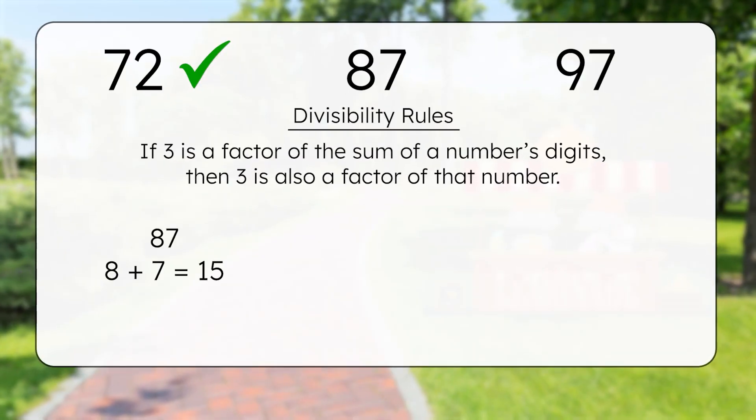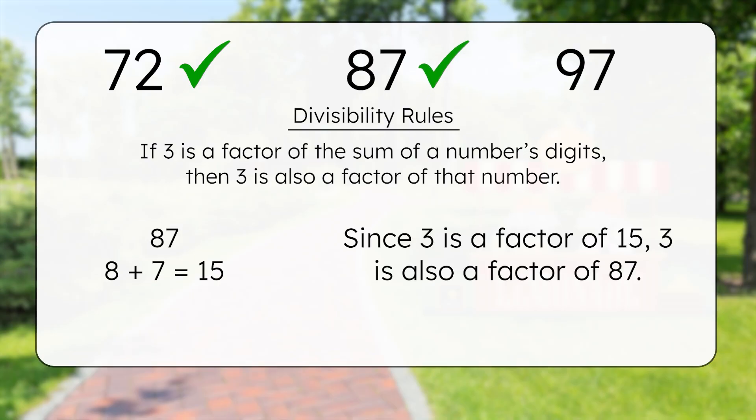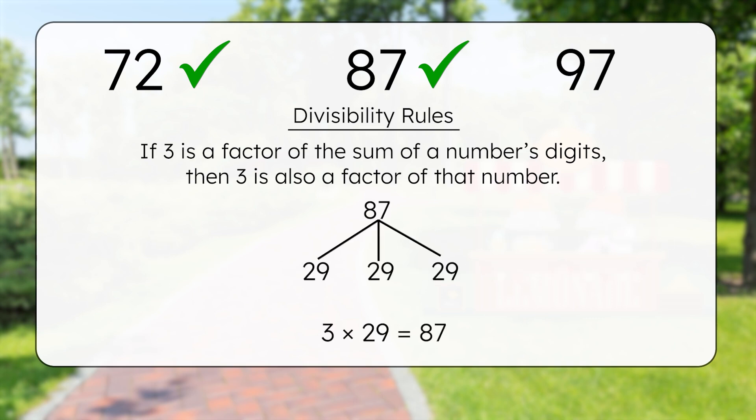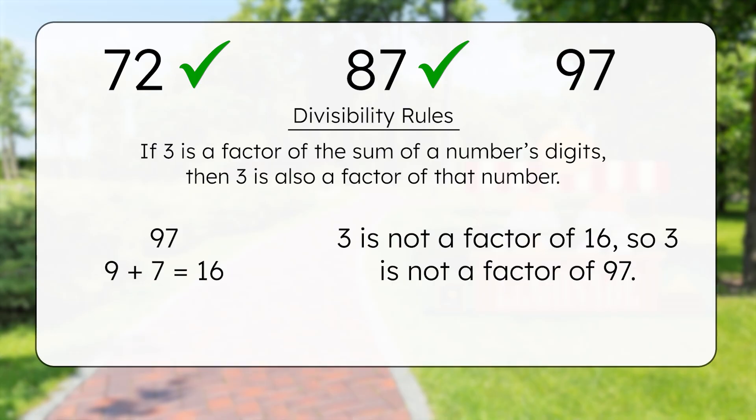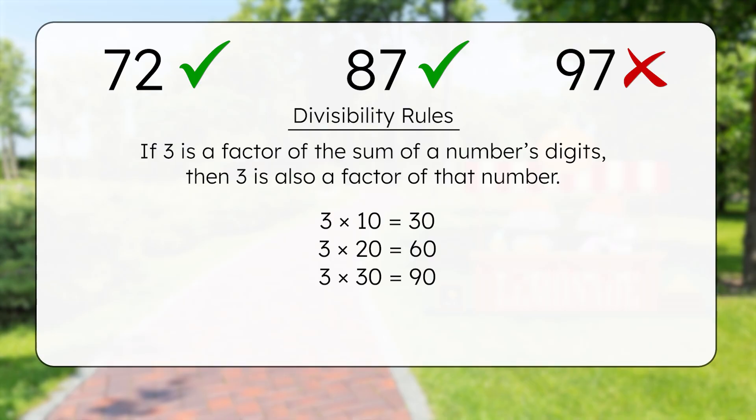Adding the digits 8 and 7 equals 15. And since 3 is a factor of 15, 3 is also a factor of 87. It can be split into 3 equal groups without anything left over, so 87 is divisible by 3. But 97's digits add up to 16. 3 is not a factor of 16, so 3 is not a factor of 97. Since 3 times 30 equals 90, another way we could find this out is by counting up from 90: 93, 96, 99. 97 isn't in that list, so 97 is not divisible by 3.